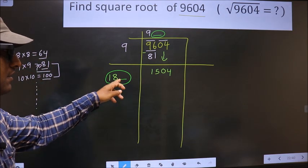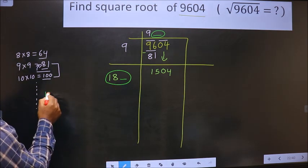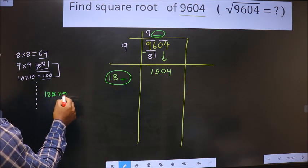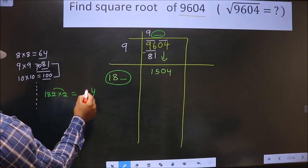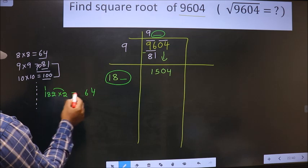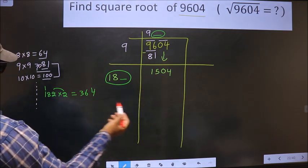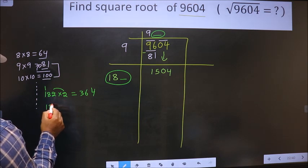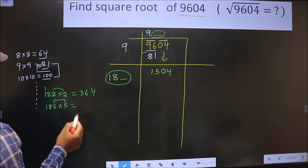Let us find the number. If I take 2: 182 into 2, 2 into 2 = 4, 2 times 8 = 16, 2 once 2, plus 1 is 3 = 364. That's far from here. So if I take 5—remember, these two numbers have to be the same.